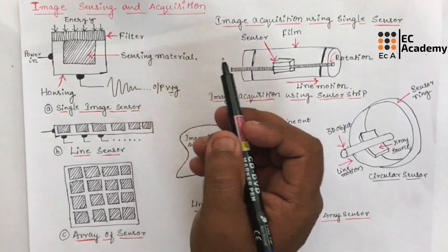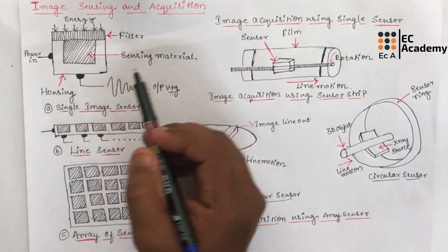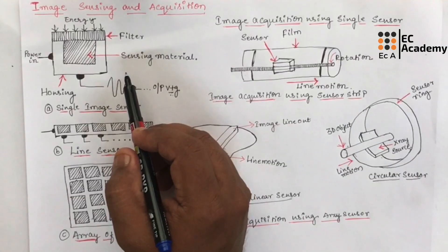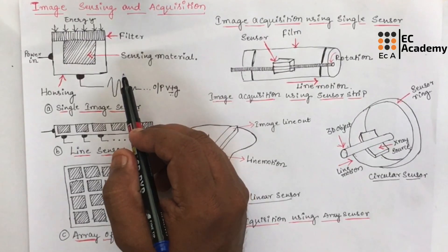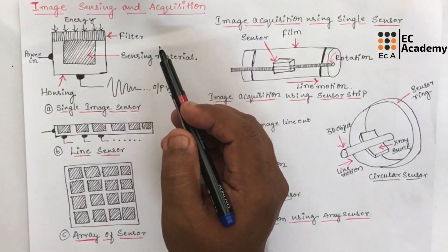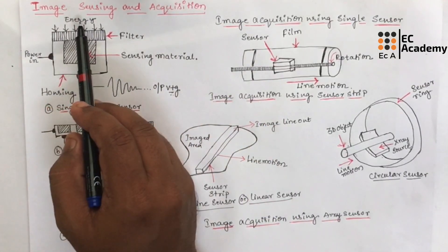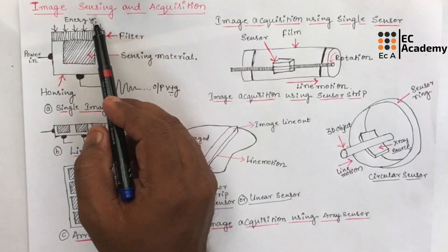In the previous lecture, we understood the components of image processing system, where the first part or the first step was to acquire an image using a sensor. So here we will understand how an image is acquired using a sensor.